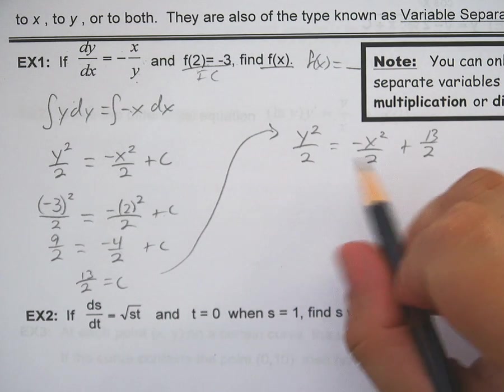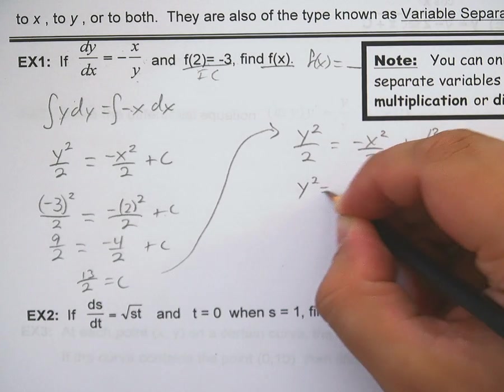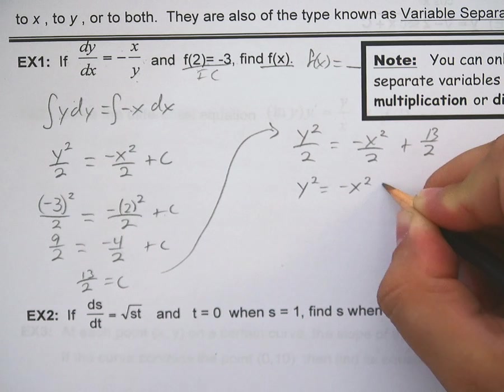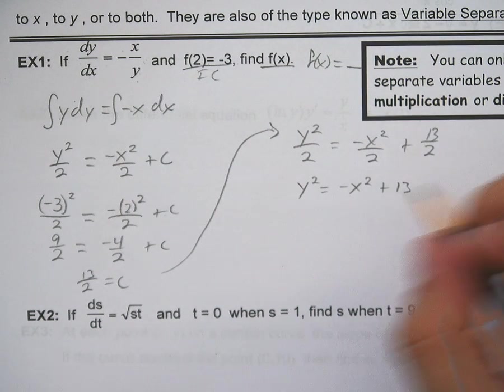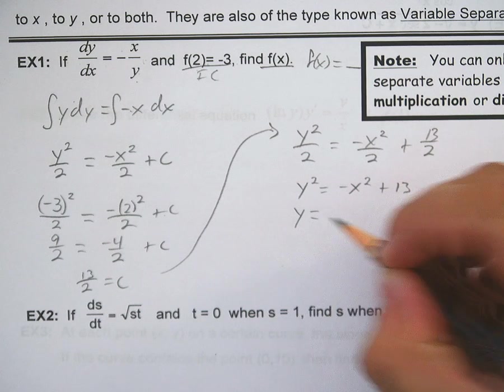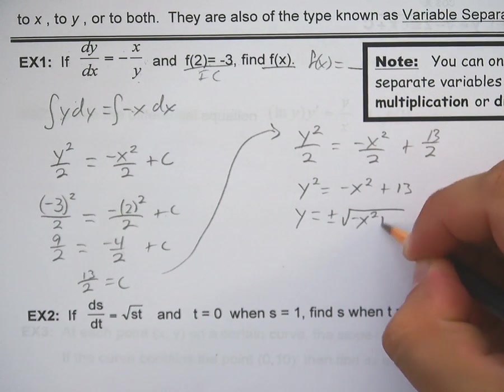Now I need to find out what y is itself. So multiply everything by 2, you get y² is -x² plus 13. And then square root y, you get plus minus square root of -x² plus 13.